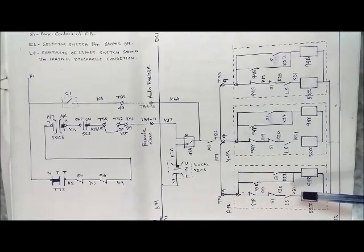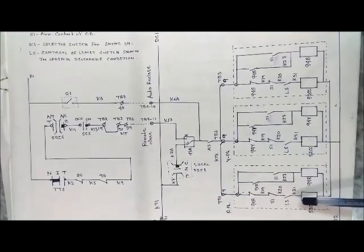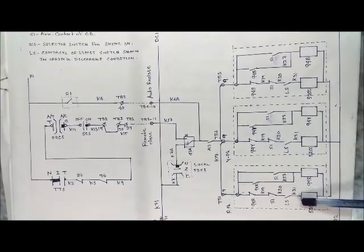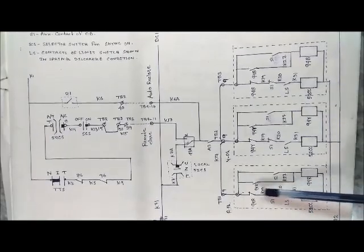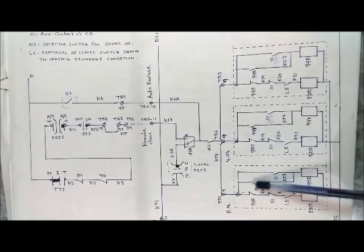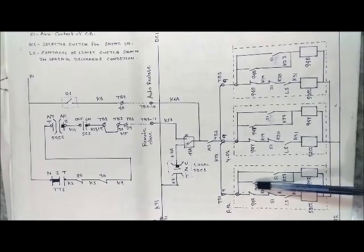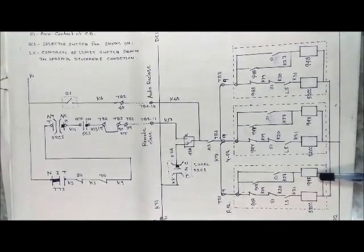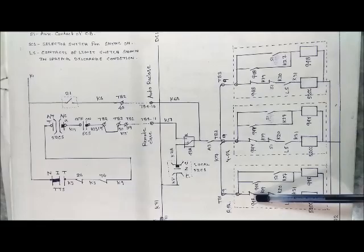S1 is the auxiliary contact of the circuit breaker shown in the breaker-off condition. LS is the contact of the limit switch in spring-discharge condition. If the spring is in charged condition, this contact will be in NC position. 94R are the auxiliary contacts of the anti-pumping relay shown in normal condition. When the anti-pumping relay is energized, the NO contact comes to NC position and the NC contact comes to NO position.